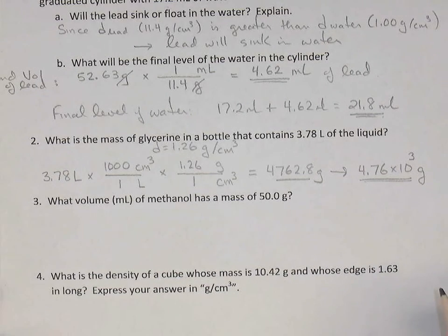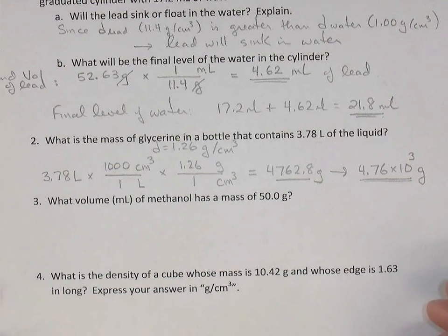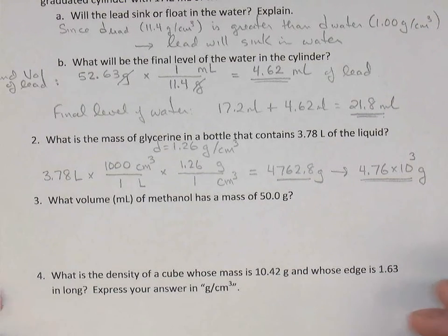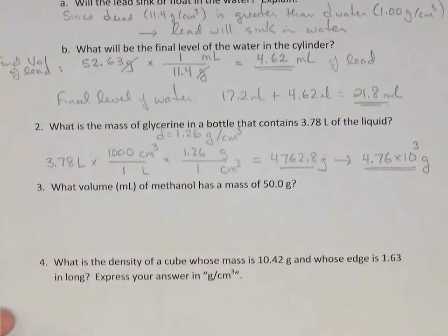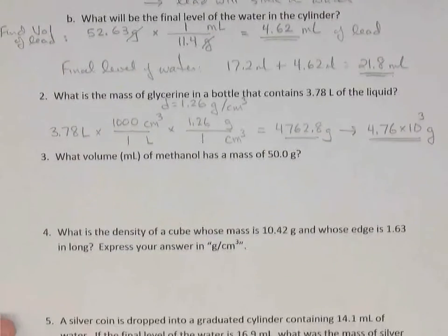Looking at significant digits — three digits in each value — we keep three digits, giving 4.76 × 10³ grams. If you wanted to switch to kilograms, it would just be 4.76 kilograms. That would also be an acceptable answer.